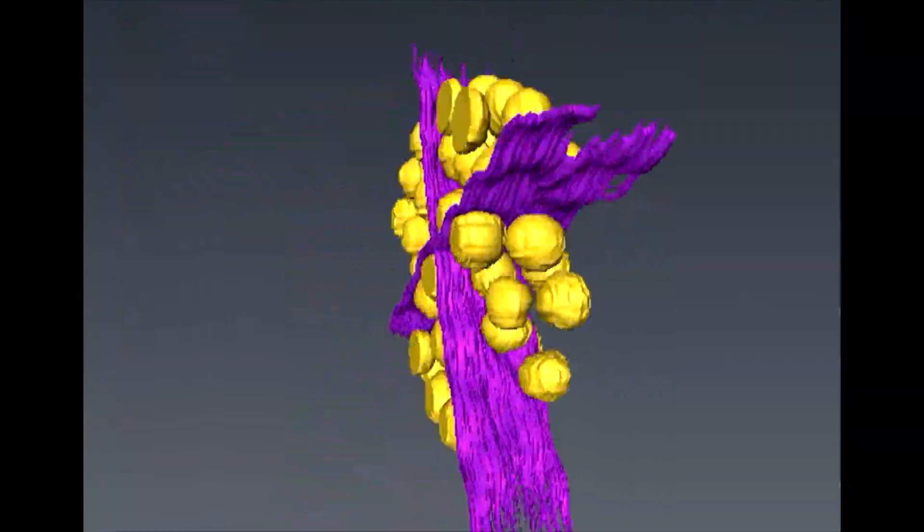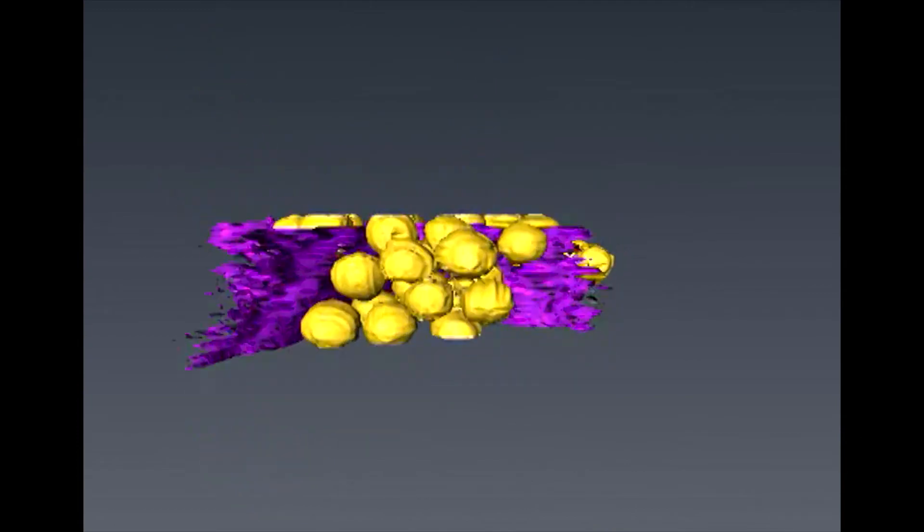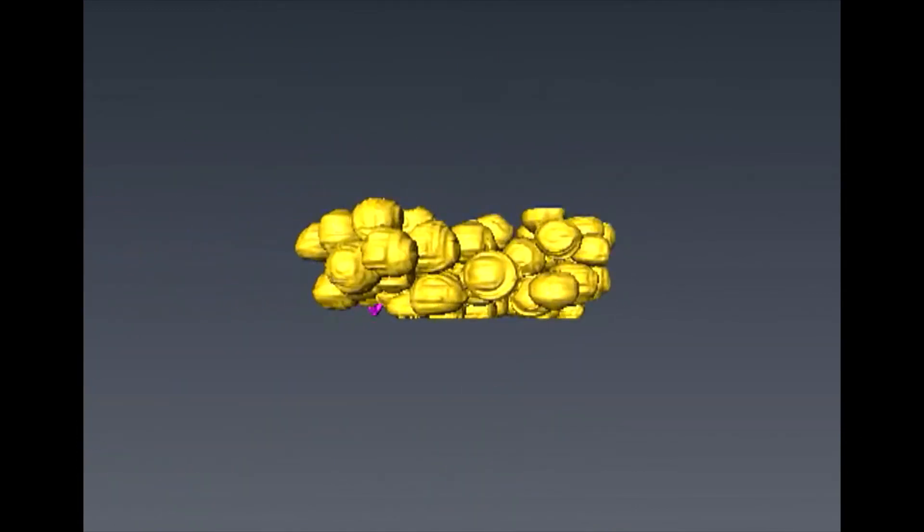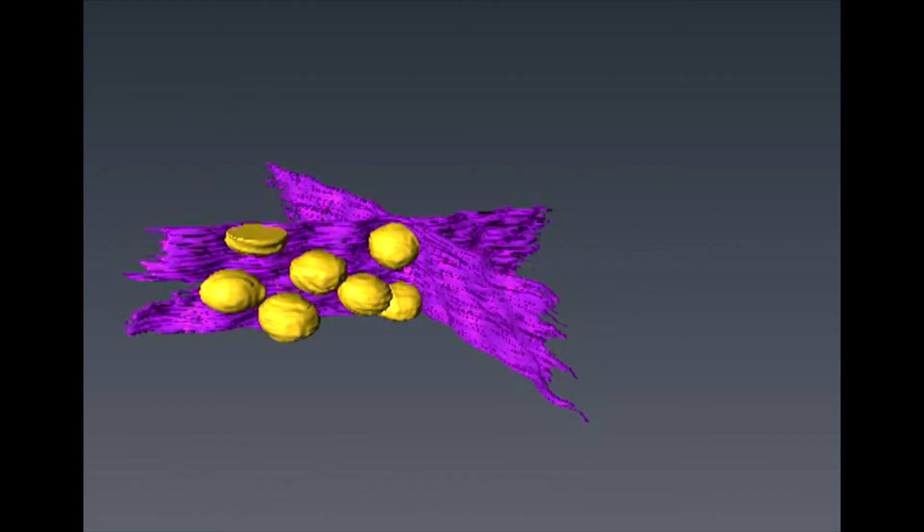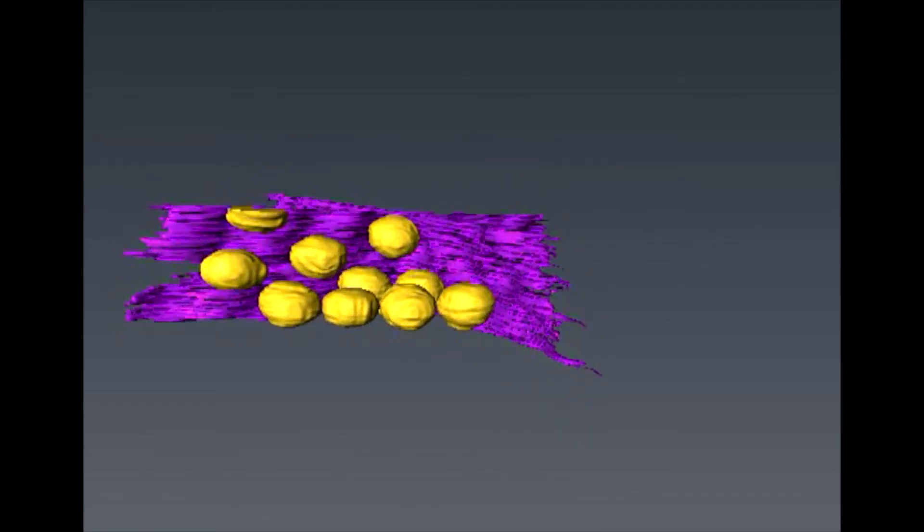Though we still don't know what materials these vesicles are made of, TEM tomography revealed that the geometric arrangement of the vesicles is preserved across the membranes of the four ISR segments and in three dimensions.